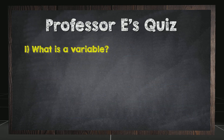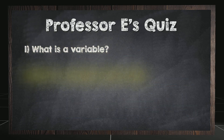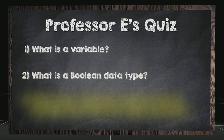What is a variable? What is a Boolean data type? Which logic statement can be used to provide more than two logic statements? Find the answers at therobotprogram.com.